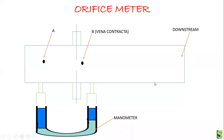This is the orifice meter. It consists of a plate with a vena contracta — a contraction area is provided so that at this point the flow of the fluid is going to increase. The velocity increases because the area through which the fluid is moving decreases.